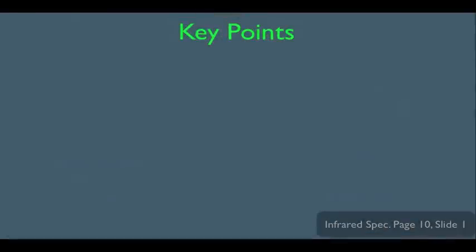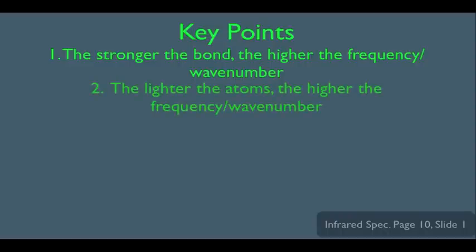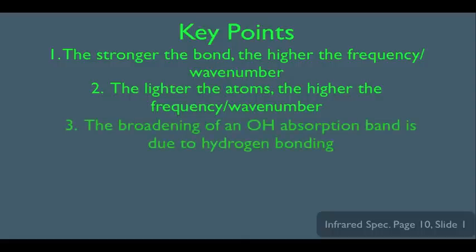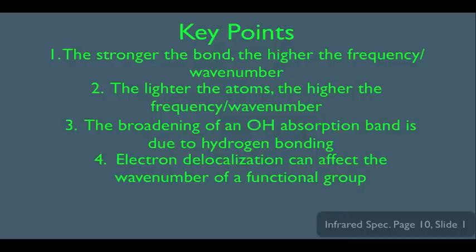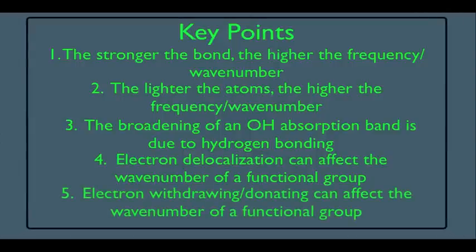So what have we learned? Number one, the stronger the bond, the higher the frequency or wavenumber. Number two, the lighter the atoms, the higher the frequency or wavenumber. Number three, OH absorption bands are broad due to hydrogen bonding. Number four, electron delocalization can affect the wavenumber of a functional group. And number five, electron withdrawing or donating can also affect the wavenumber of a functional group.